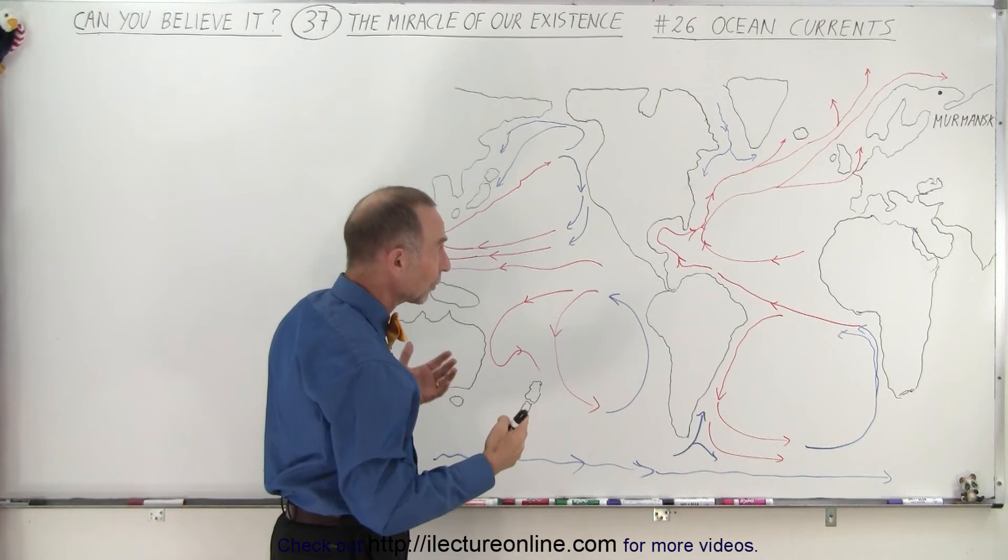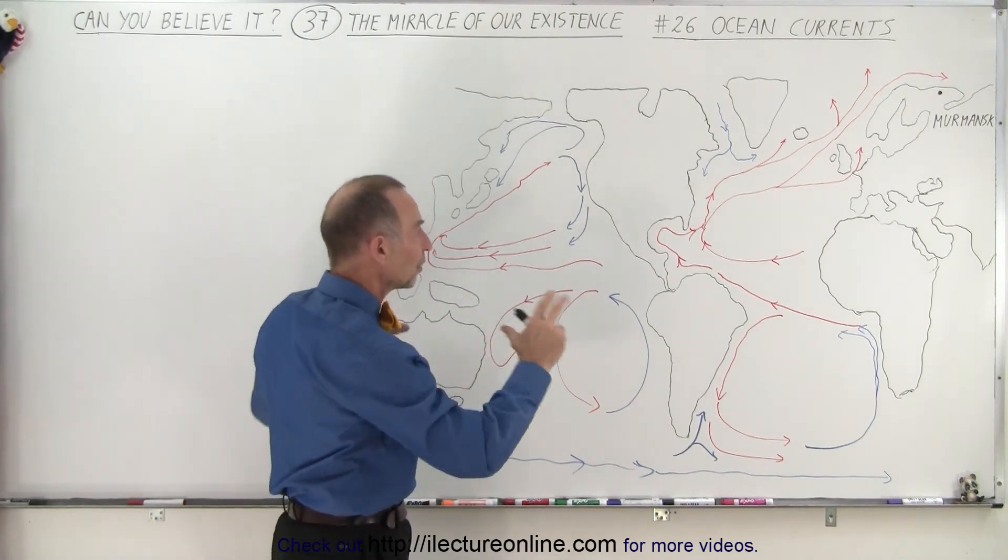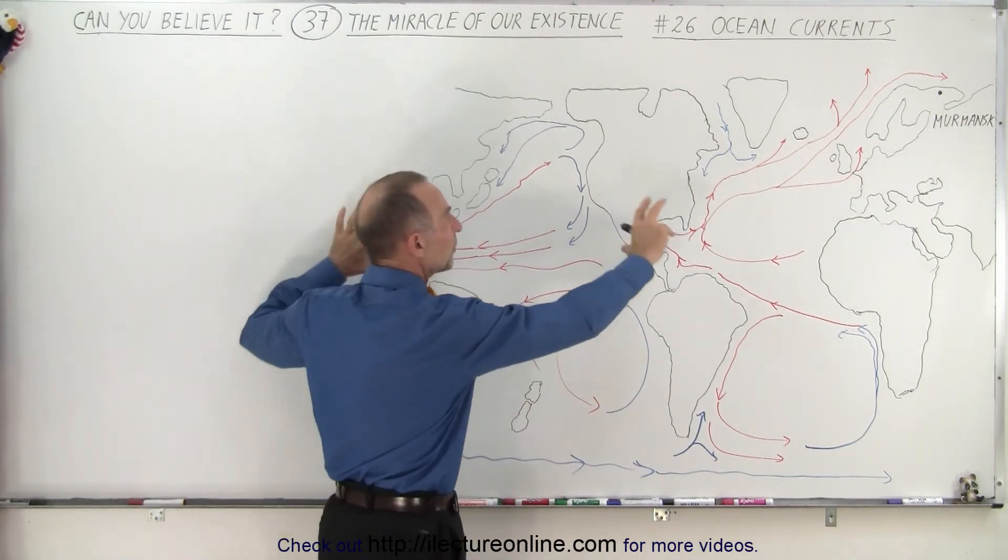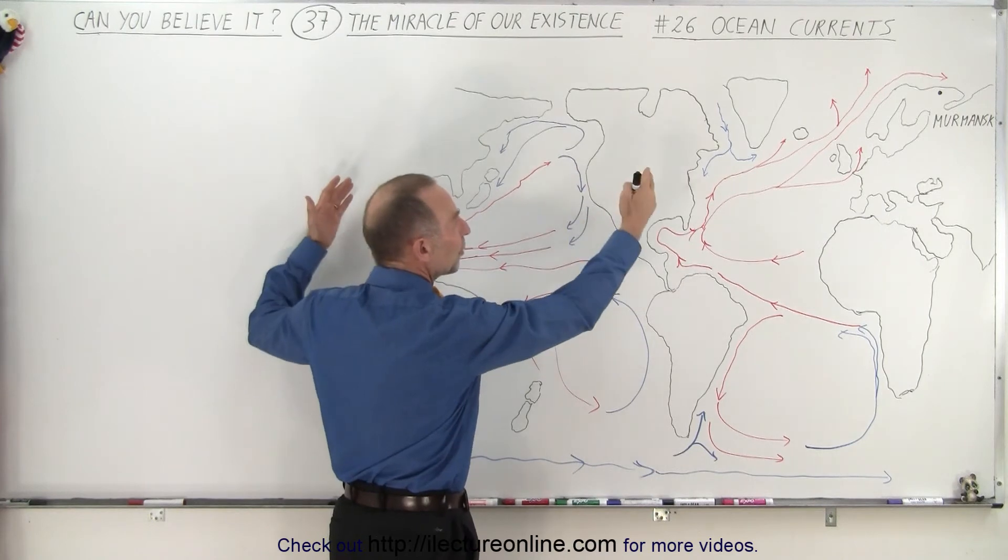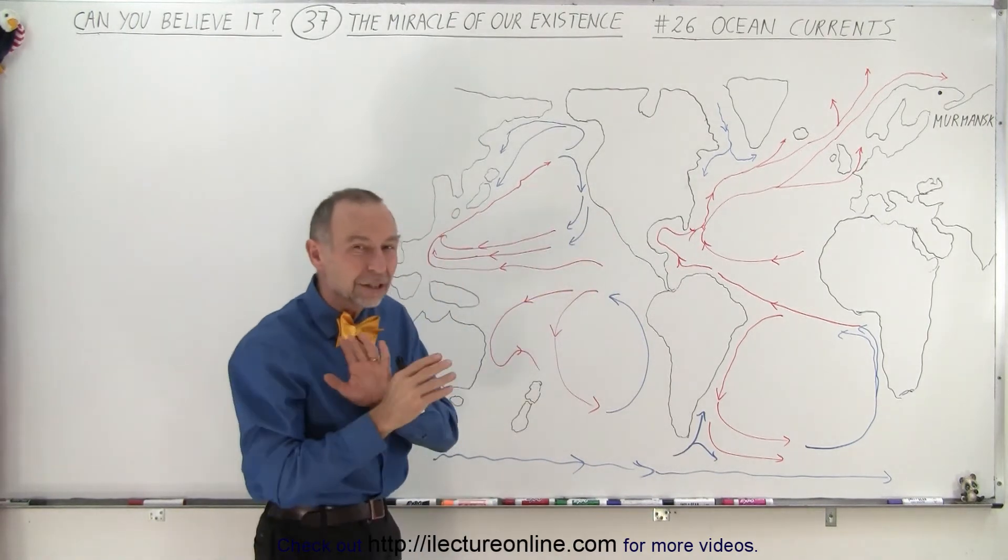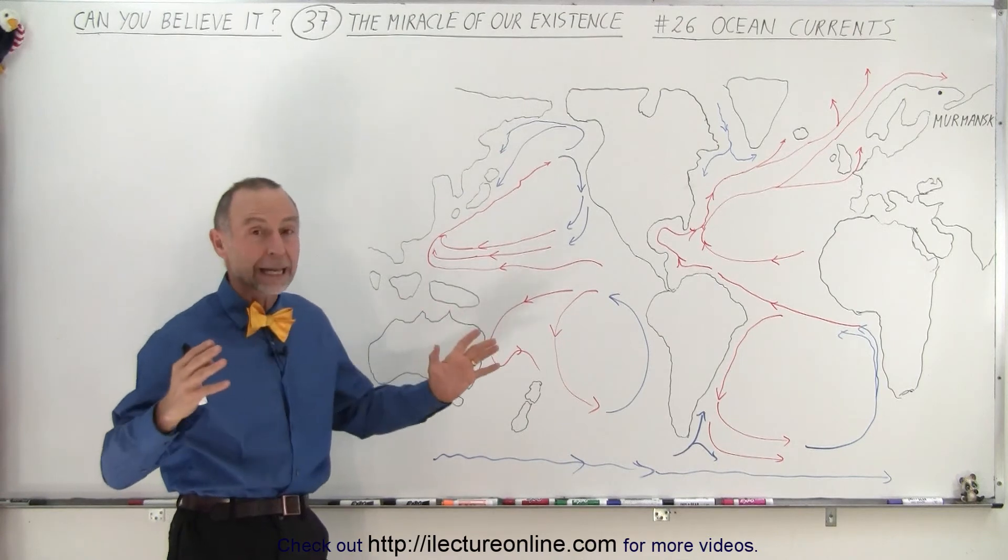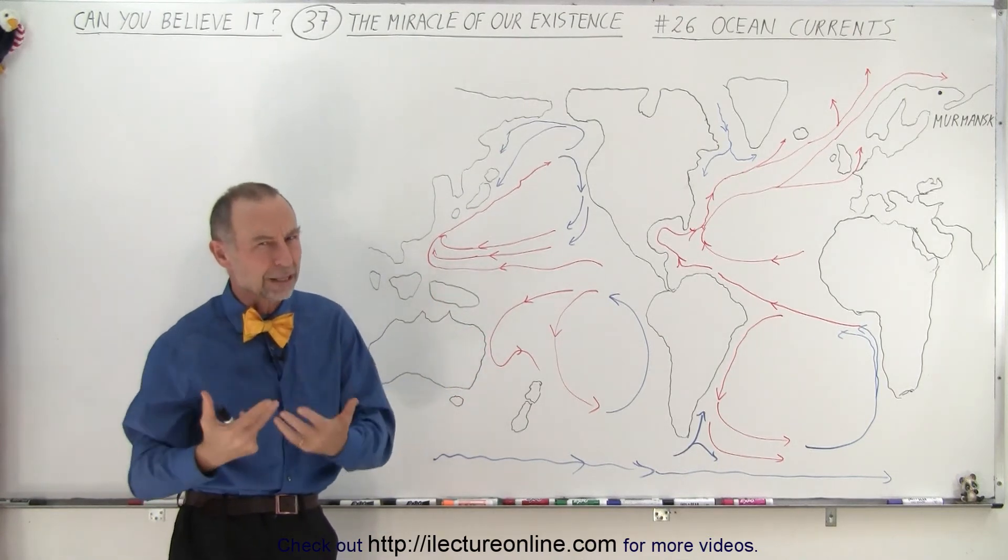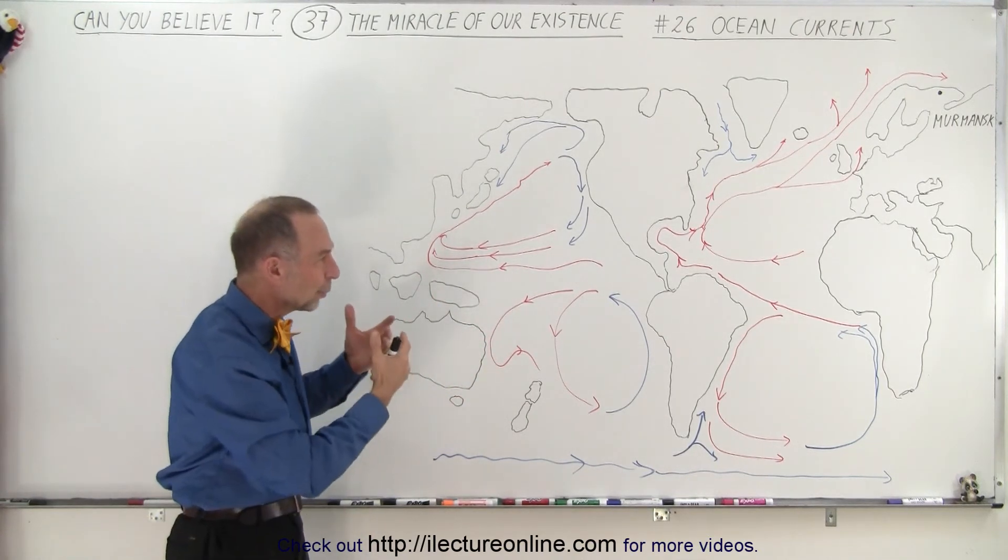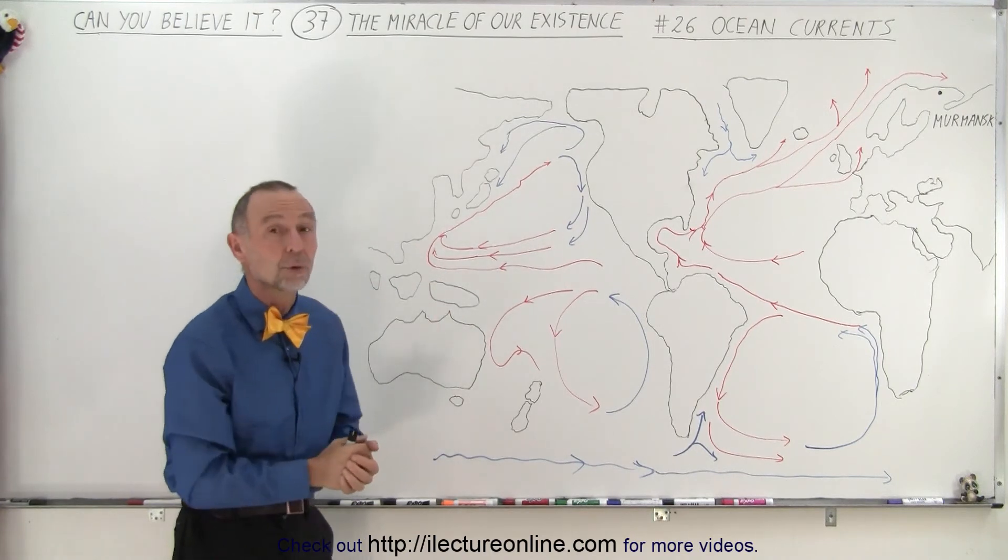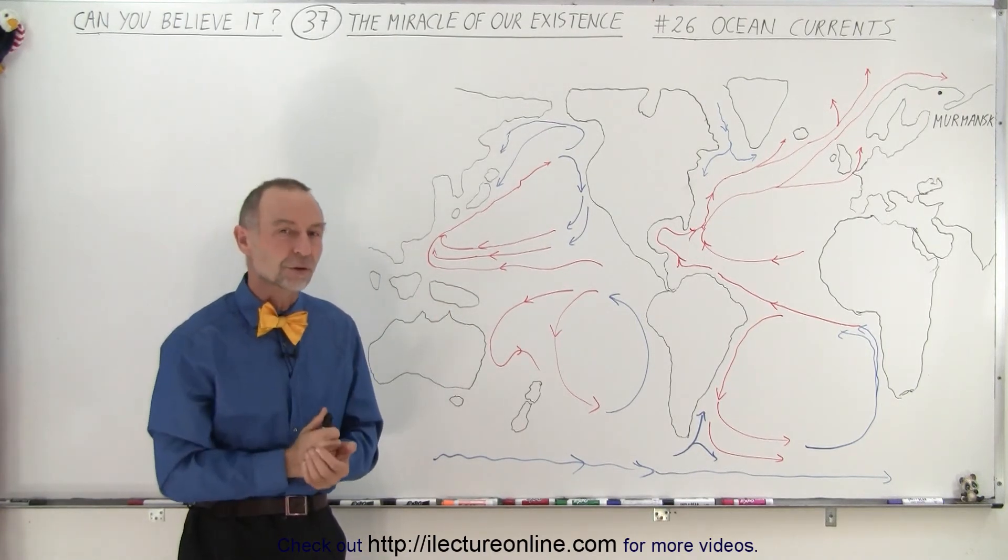So here you can see that ocean currents take vast regions of the world, cool them down where it's hot, warm them up where it's cold, and they distribute heat in a tremendous way all around the planet, making Earth this miraculous place where we can live in relatively mild climates all the way around because of these ocean currents.